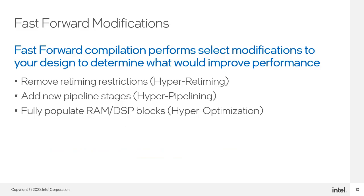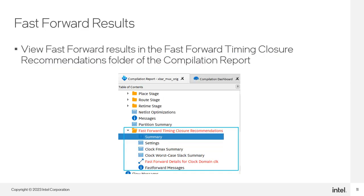When Fast Forward attempts to modify a design, there are three basic changes it will perform. First, it will try to simply remove some basic retiming restrictions — this is called HyperRetiming. Second, it will try to add in new pipeline stages at select points in the design — this is called HyperPipelining. Third, it will try to enable RAM and DSP block internal registers if they have not already been enabled by your RTL — this is called HyperOptimization. Each time a collection of modifications are made, Fast Forward reruns the retiming to see if the modification produced some nominal performance gain.